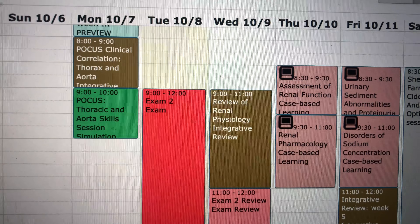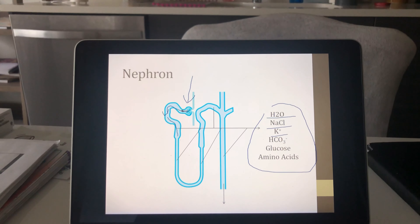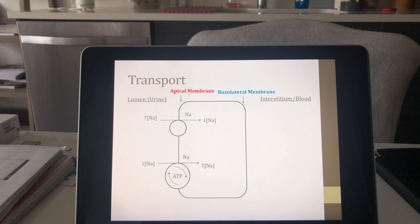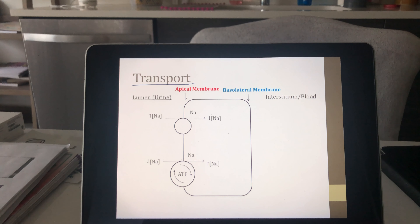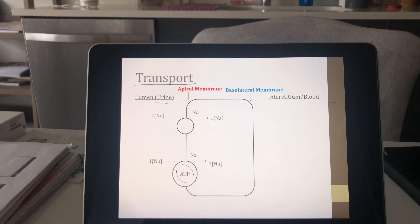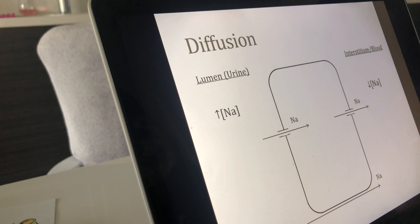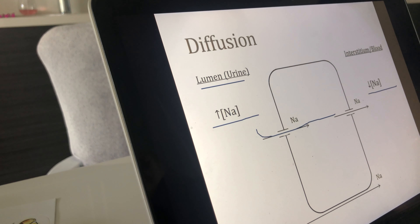All right, time to study. Sometimes the tubule cells in the nephron won't use any proteins at all — they'll just use simple channels. So if we have a high concentration of sodium in the urine and a low concentration in the interstitial blood, cells will just have channels or openings where sodium can diffuse in and out, and this is another way that reabsorption of sodium can occur.